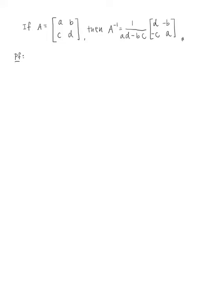Hi everyone, this is Dr. Nock, and here is the proof for the formula for the 2×2 inverse matrix. If A is [A, B, C, D], then A inverse is 1 over the determinant of A, which is AD minus BC, multiplied by the matrix where you swap the main diagonal, and then toss the negative on the C and B.